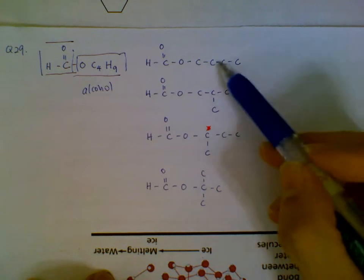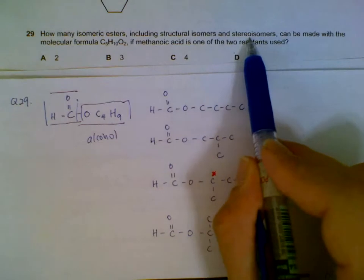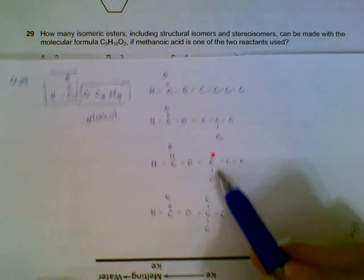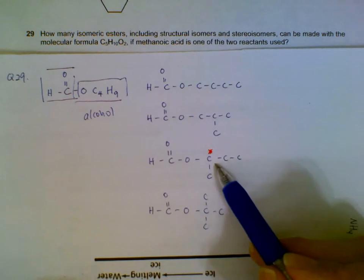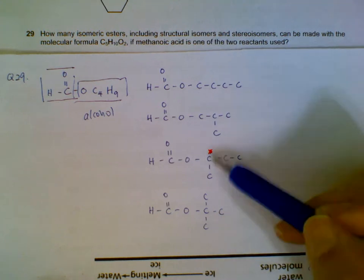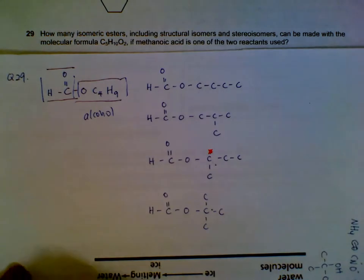And then looking at the question - including stereoisomers - we must check that this one also has a chiral carbon at this point. So we have a total of one, two, three, four for the mirror image and five. Total of five possible ester isomers.